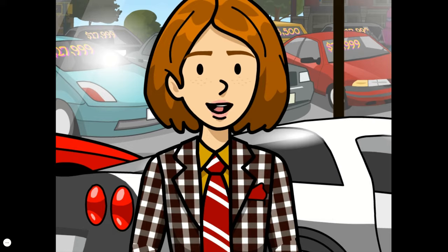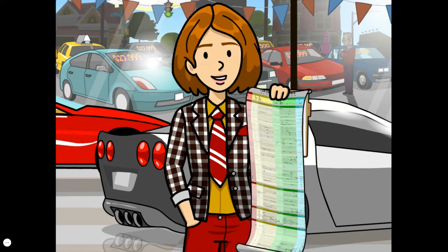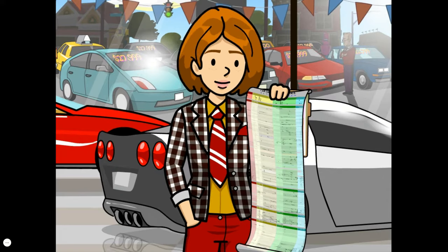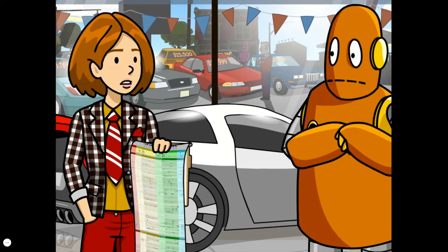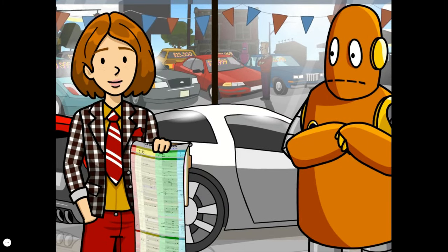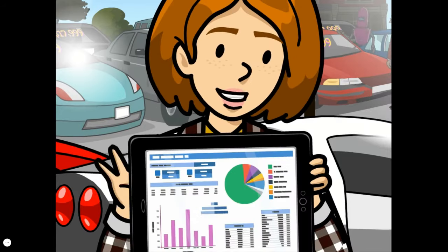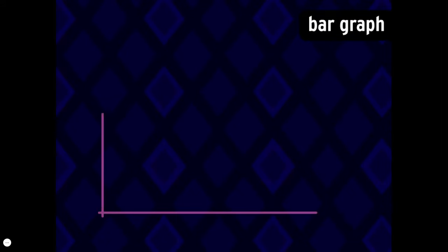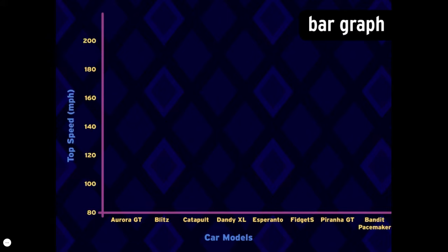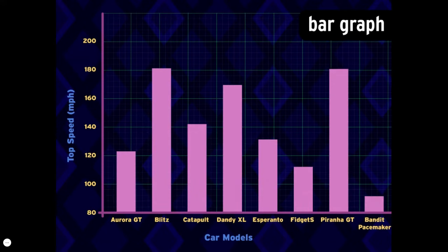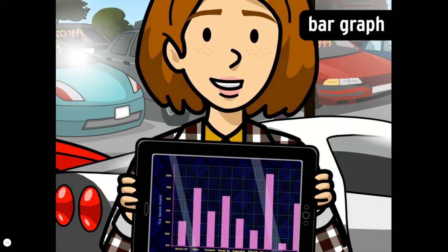Check out this giant list of specs on this year's car models, including each one's top speed. How is this customer supposed to see which one's the fastest? But if we display each model's top speed in a bar graph, it's a lot easier. It uses bars of different heights to compare amounts. Bar graphs are useful when you're looking for the most or least of something.